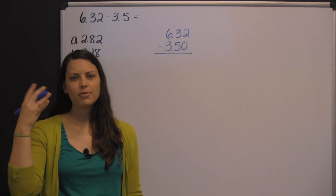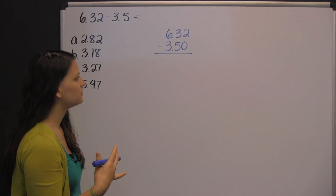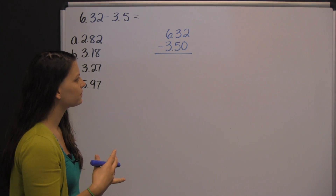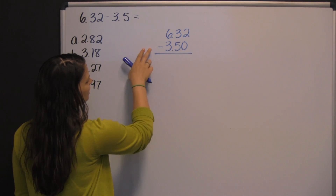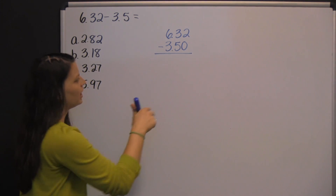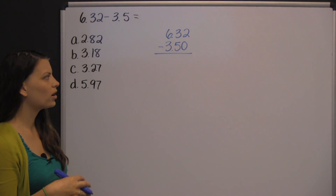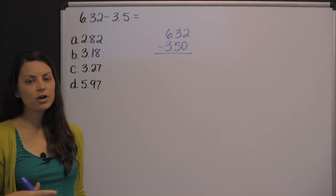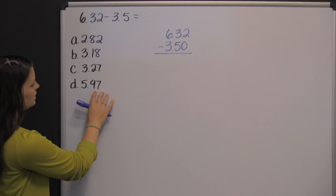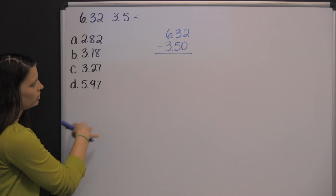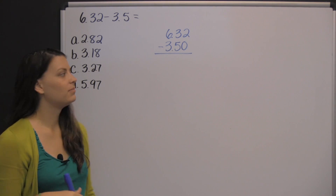Sometimes it's helpful to come up with an estimate in your head before you actually subtract. We have six minus three and a half, just rounding it, or even six minus four. Your answer should be somewhere around two, which means that answer D is way too high — we already know that just from estimating.